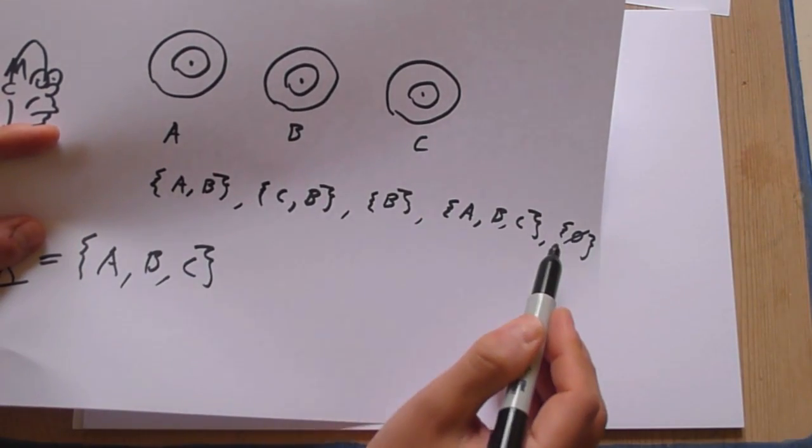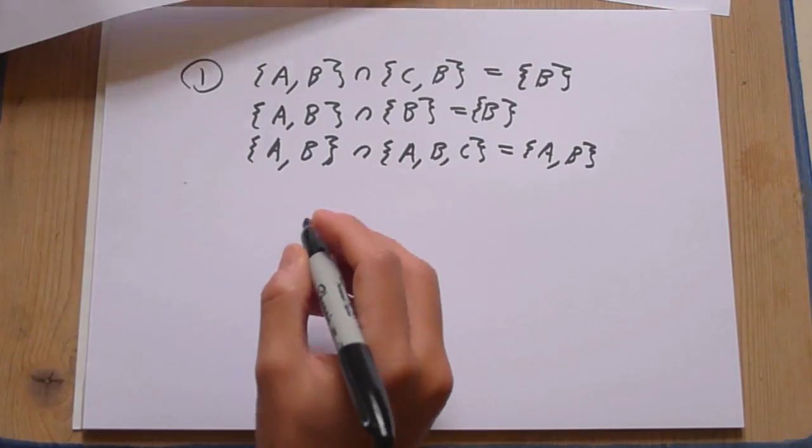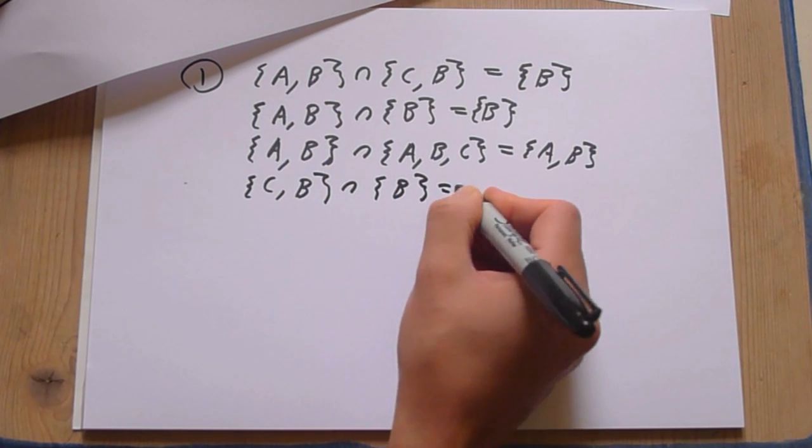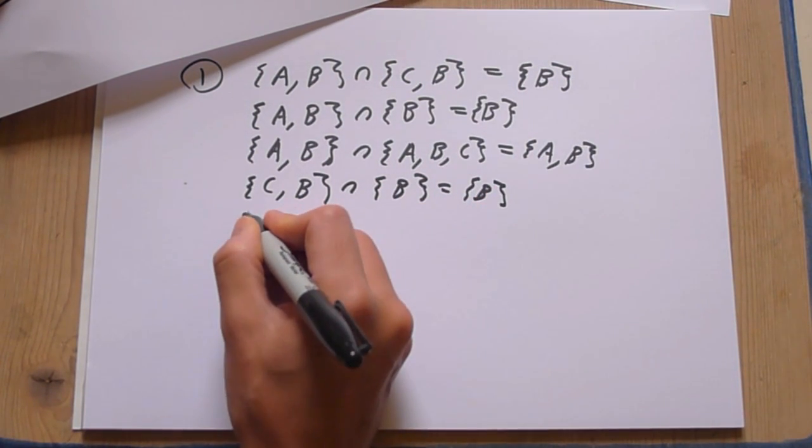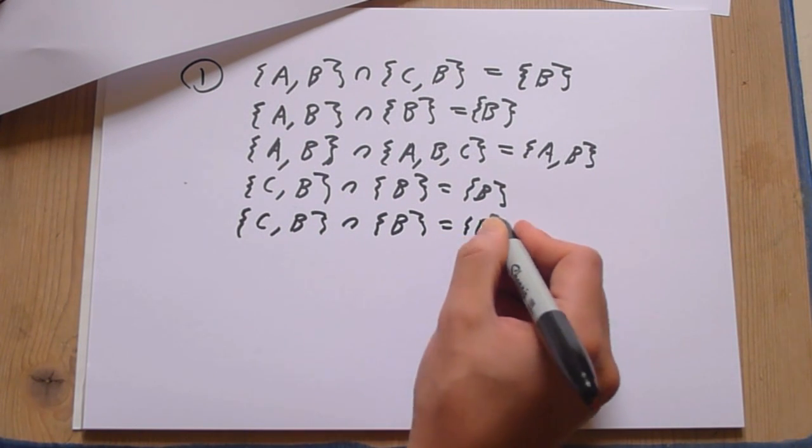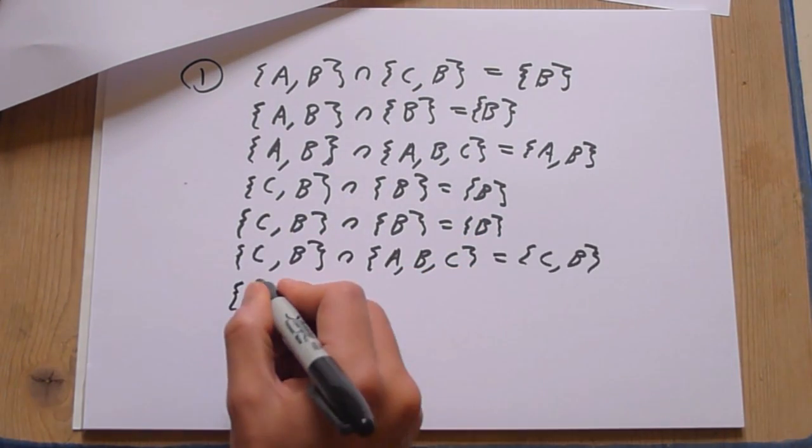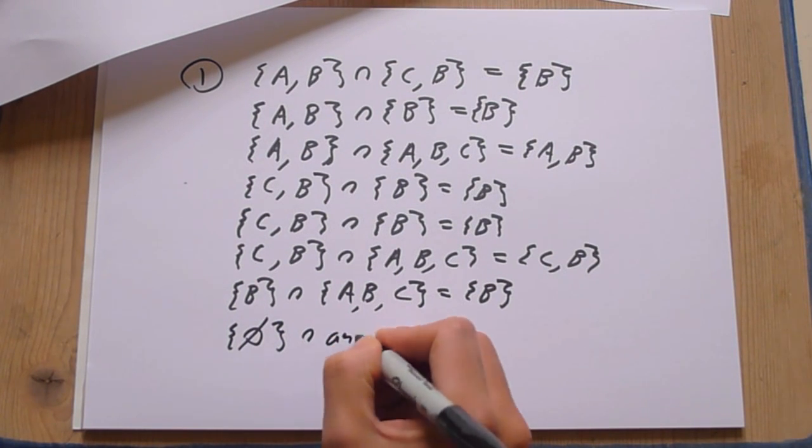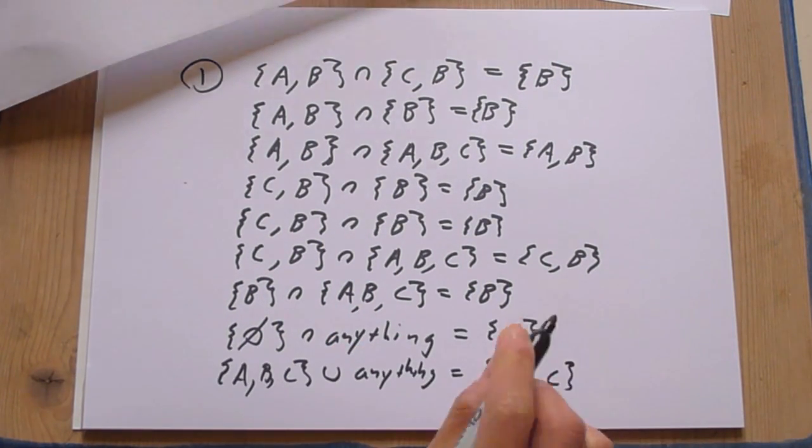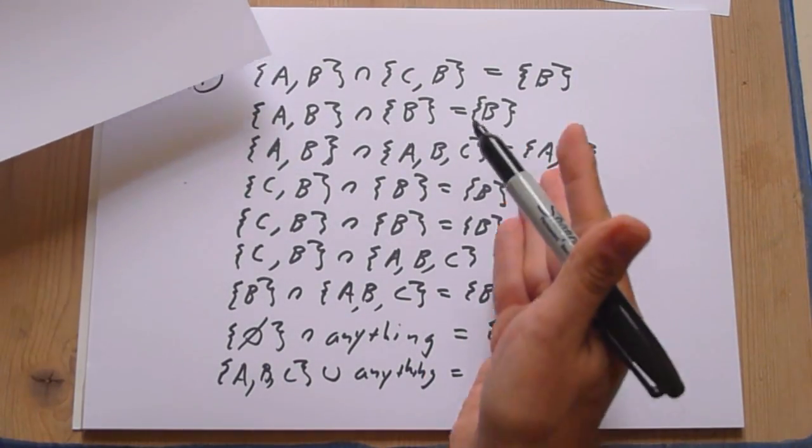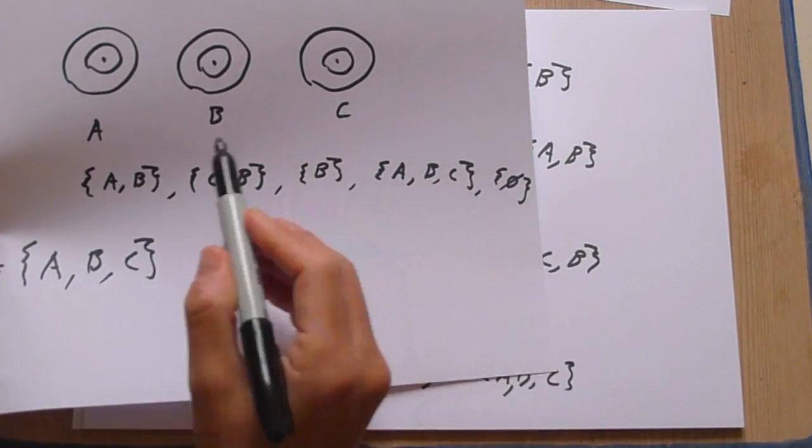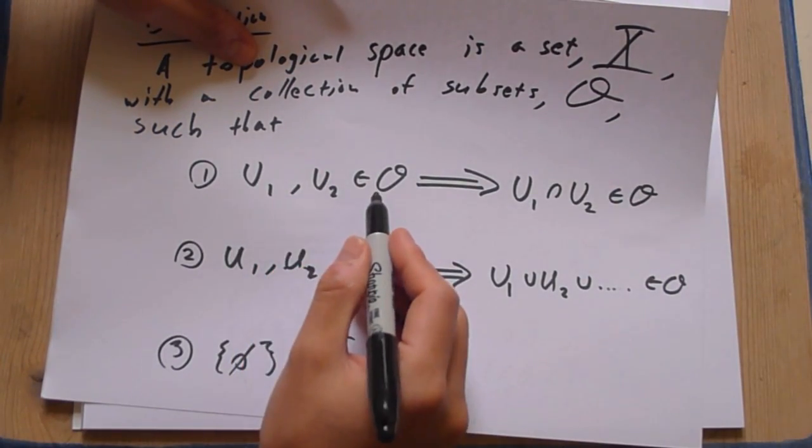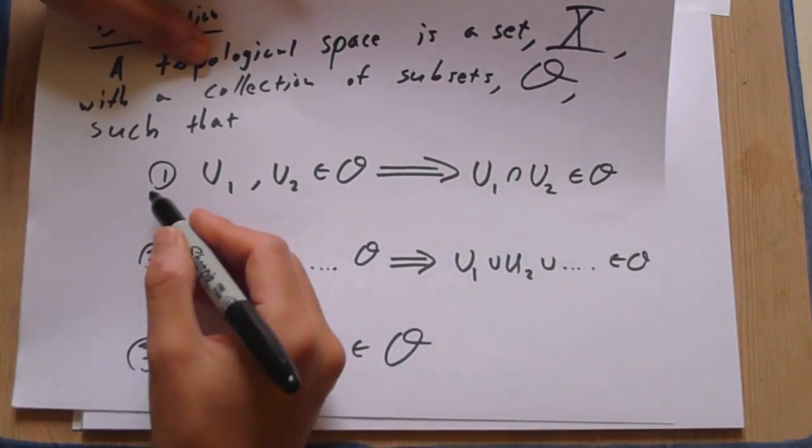These are all in the collection of things we defined as things that he'll hit with bullets. Similarly, we can check C, B, intersection, B, equals B, on and on and on. And we look at this list of all these things on the right-hand side of these equations, and we notice we never leave this collection here. So, this first requirement, that if we take any two sets that are open sets and intersect them, we get another open set, this first requirement is satisfied.